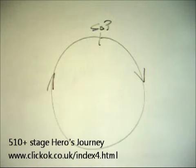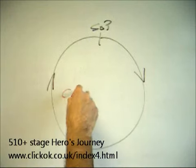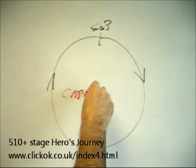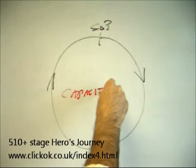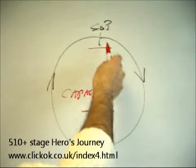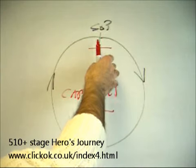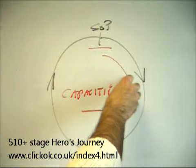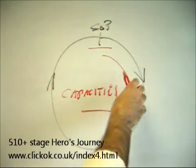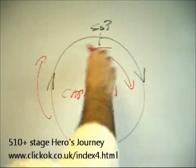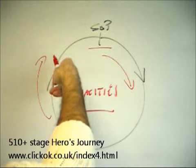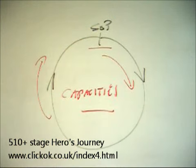From another point of view, we have capacities. Initially, the capacities to maintain a state of perfection are possessed. The capacities are then lost, and the process of regaining those capacities in order to restore a state of perfection is undergone. That is story from another point of view.